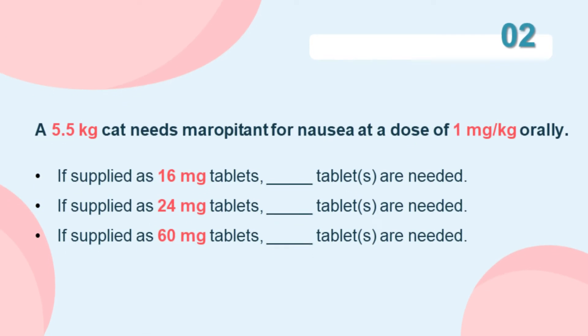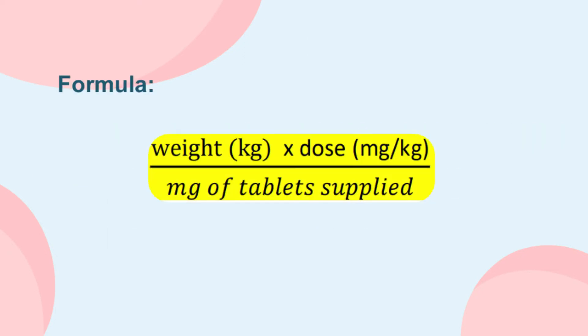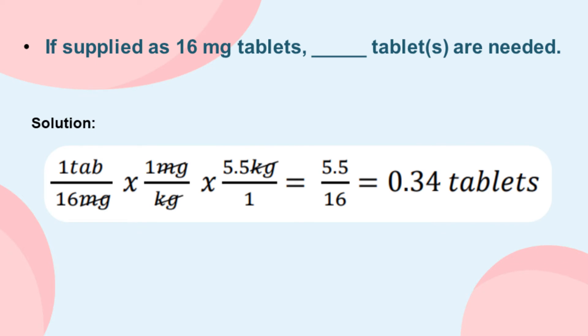Moving on, we have another set of problems. A 5.5-kilogram cat needs maropitant for nausea at a dose of 1 milligram per kilogram orally. If supplied as 16-milligram tablets, how many tablets are needed? First, identify the given: the weight, the dose, and the milligrams of tablets supplied. Second, substitute the given into the formula, cancel out like terms, multiply, and divide. If supplied as 16-milligram tablets, 0.34 tablets are needed.